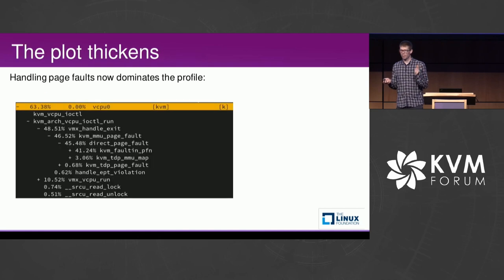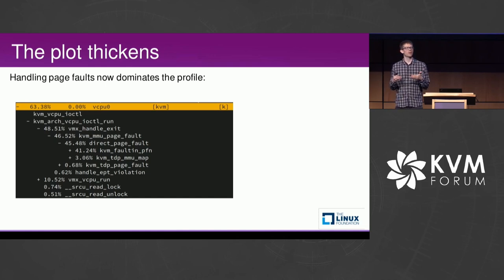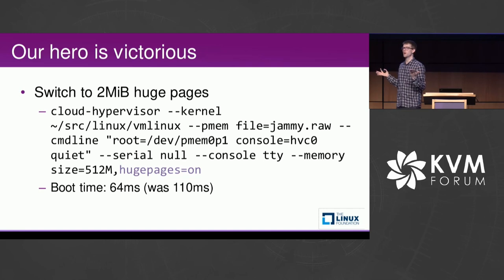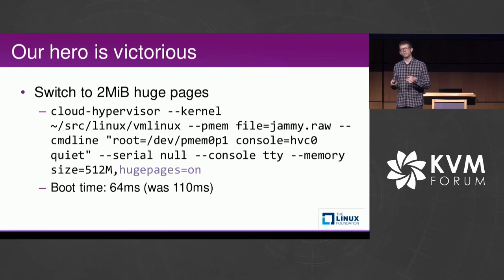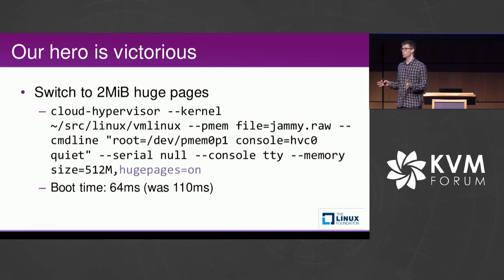When I looked at the profile again, I saw the cost was now coming from mapping those pages into the guest. So I thought — what happens if we use huge pages? We know the VM is going to be of reasonable size and will work in a particular manner, so huge pages would be a perfect choice. If you enable huge pages, the boot time improves to 64 milliseconds — that number I quoted earlier. Interestingly, I tried 1GB huge pages and it got worse again, just from zeroing all that memory you don't necessarily need at boot time. So 2MB huge pages was the sweet spot for booting the VM.